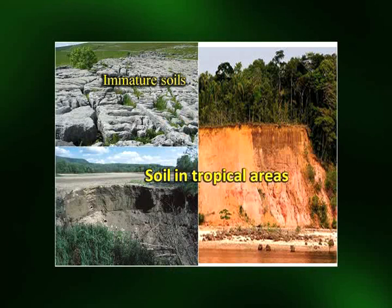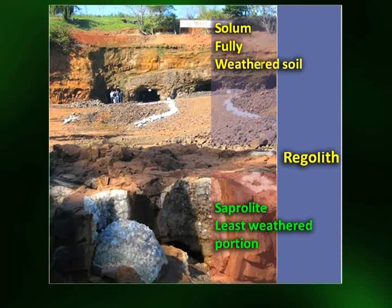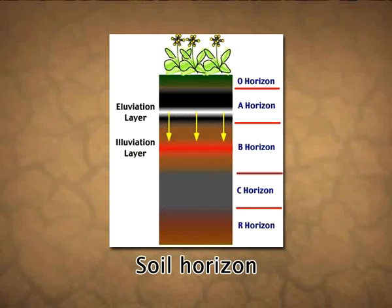A soil profile can be as little as 10 centimeters thick in immature soils and as deep as several meters in tropical areas where the climate is conducive to rapid alteration of the underlying rocks to form the soil. All the weathered material within a soil profile constitutes regolith. The upper horizons, which have the most weathered portion, are called the solum, while the least weathered portion of the regolith lying directly above the consolidated bedrock is called saprolite. Each soil type has at least one, usually three or four horizons, resulting from chemical weathering, illuviation, and organic matter decomposition.